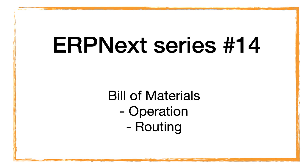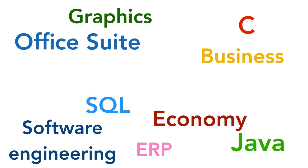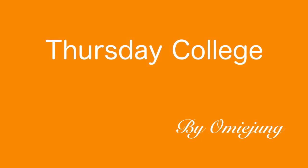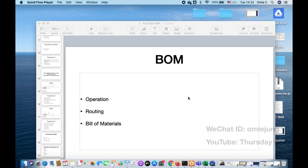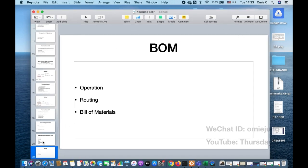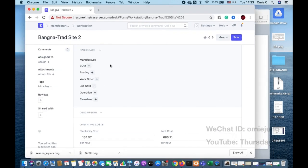Hello guys, this is the ERP Next series, clip number 14. Today we're going to be talking about how to set up the operation and routing in the Bill of Materials. In the last video clip we covered the workstation, which calculates costs in terms of hours. So today we're going to go on to operation, routing, and Bill of Materials.